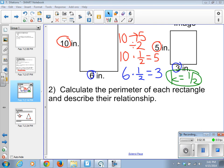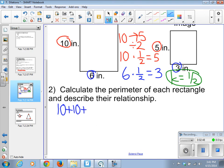Next, we're going to calculate the perimeter of each rectangle and describe the relationship. Our original triangle, the 10 by 6. Well, we know we add all the sides up. 10 plus 10 plus 6 plus 6.